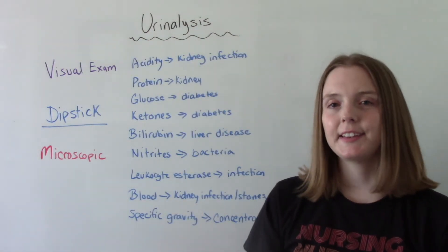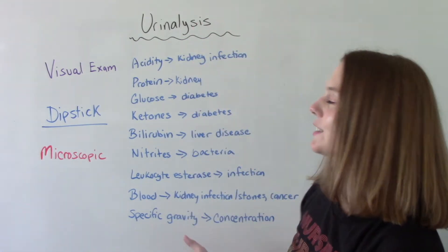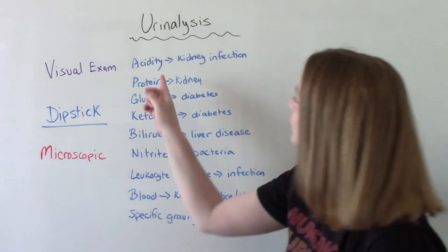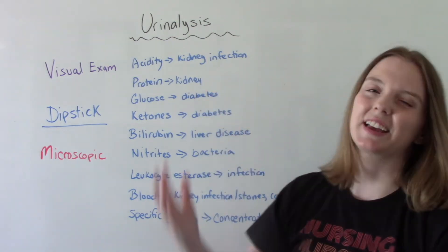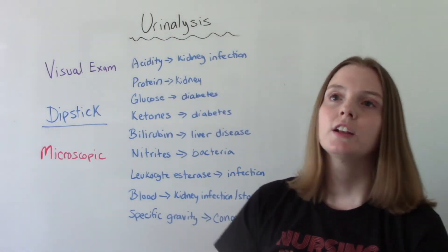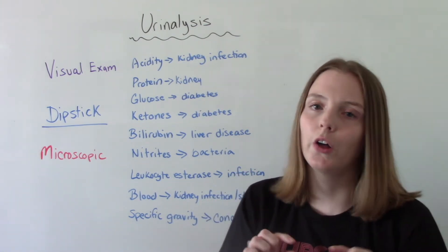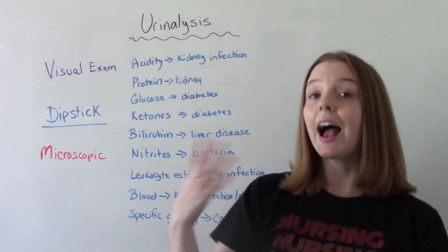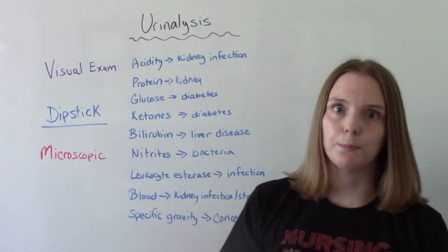The second part of the exam is the dipstick test, which tests for several more things than just the visual exam. The acidity — so the pH of the urine — can tell us if there are signs of infection. Protein: normally in our urine, there are very, very small levels of protein. If you have higher levels of protein than normal, it could be a sign of a kidney problem.